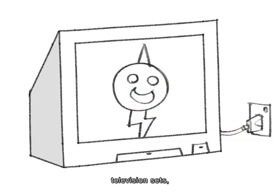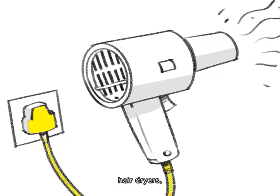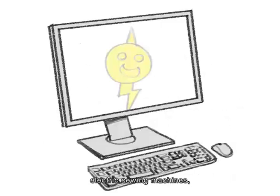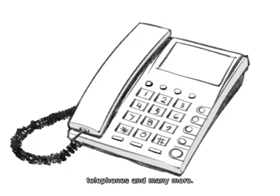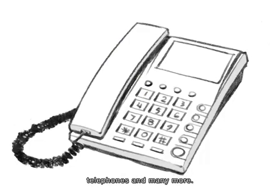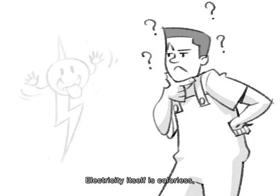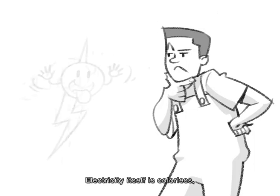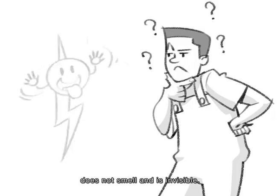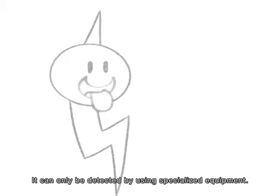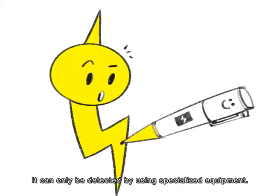Electricity powers television sets, hair dryers, electric sewing machines, computers, telephones, and many more. Electricity itself is colourless, does not smell, and is invisible. It can only be detected by using specialised equipment.